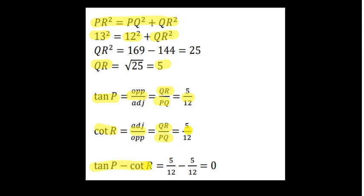So tan P minus cot R is equal to 5 by 12 minus 5 by 12, that is 0.